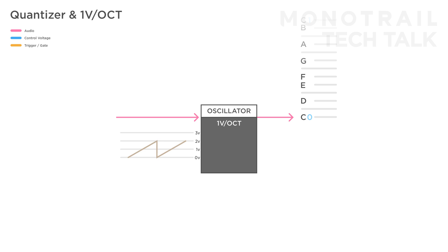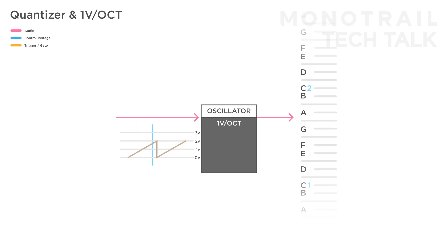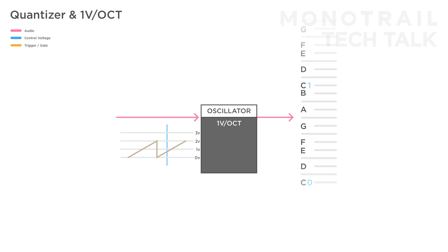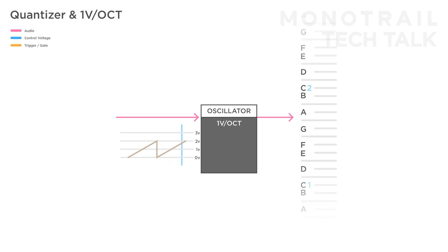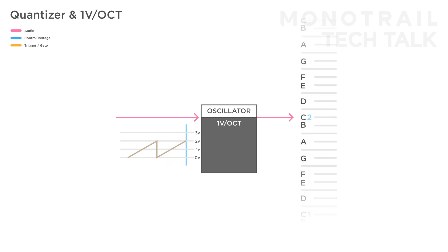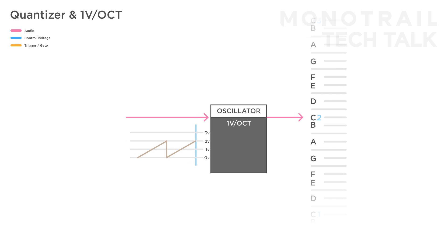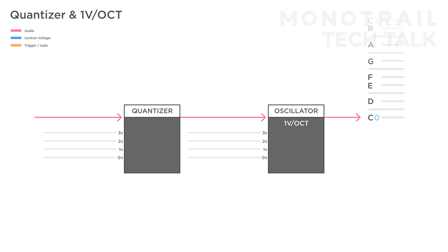If you take a slowly rising looping envelope between 0 and 2V and feed it to your oscillator, the pitch would just simply slide up — from a C to a C2, for example. If you want your oscillator to only output frequencies that match a regular western scale, you would need to feed it the exact voltages that correspond with the notes you'd like to use. This is where the quantizer comes in.